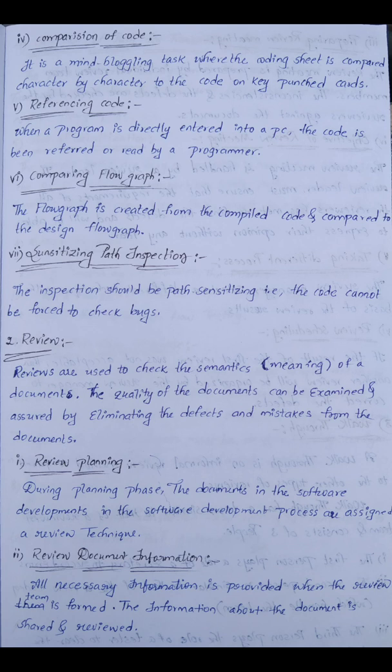Path sensitizing inspection: the path inspection should be path-sensitizing. The code cannot be forced to check bugs; it requires path sensitization to debug properly. Reviews are used to check the semantics — that is, the meaning of the document or the code.